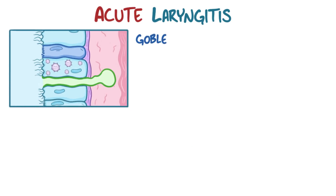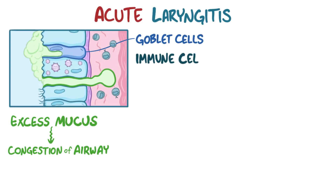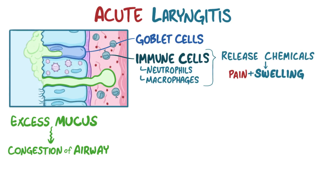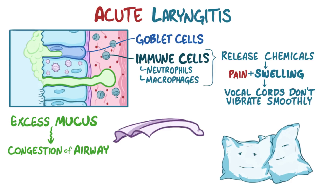In acute laryngitis, the goblet cells over-secrete mucus and this leads to congestion of the airway, and immune cells like neutrophils and macrophages release chemicals that cause pain and swelling. Swelling of the vocal cords changes the way they move — imagine two thin sheets flapping in the wind turning into two large pillows that barely move. As a result, the vocal cords don't vibrate smoothly, which causes dysphonia, or hoarse voice.